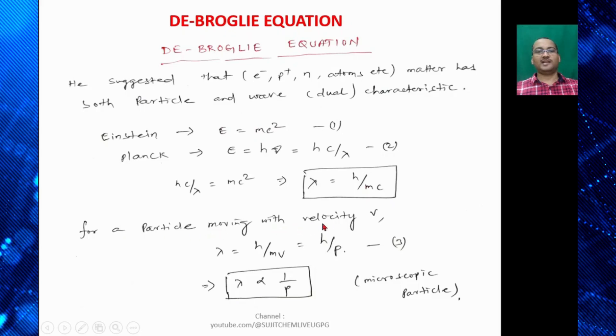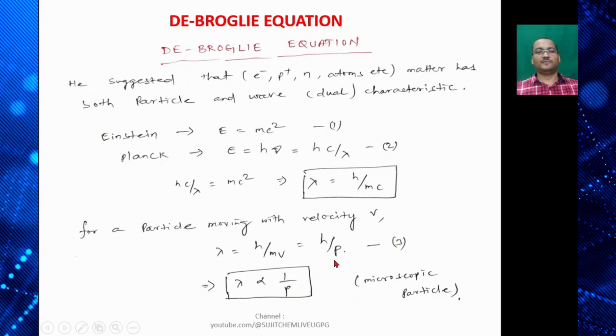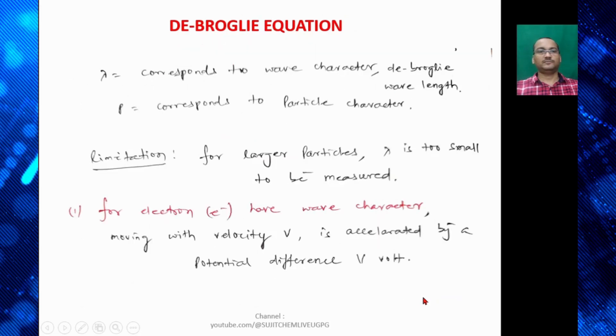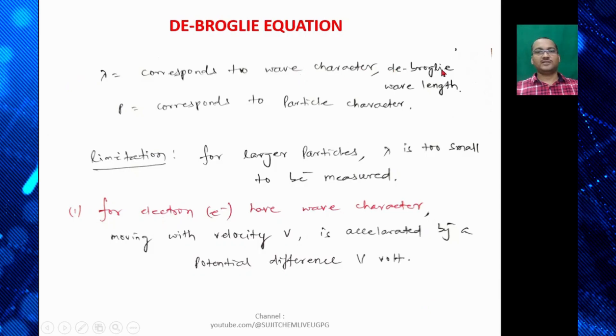And for a moving particle with velocity v, so λ becomes h/mv. So that is equal to h/P. So that is called momentum. So λ is inversely proportional to the P momentum. And this is applicable for microscopic particles.